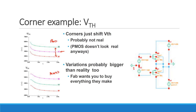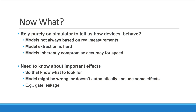We won't do this too much in this class, but if you really want to build a chip you need to think about these models. You use them not because you believe that's exactly what's going to happen, but if you don't check what happens in different corners there's a strong chance your circuit won't work — some bogus effect in the model you didn't account for could mean the circuit isn't robust. The whole point is that modeling these things is hard, so you probably won't be too successful doing it entirely by hand.